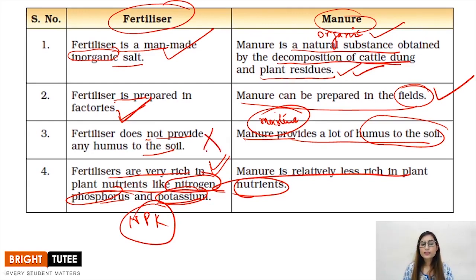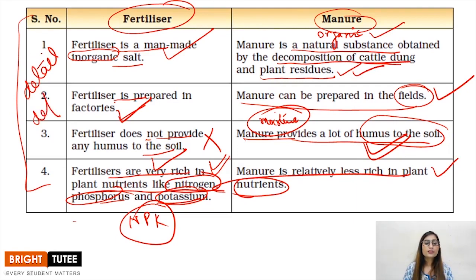Fertilizer does not provide any humus to the soil while manure provides humus to the soil. Then, fertilizers are very rich in particular nutrients, plant nutrients such as nitrogen, phosphorus and potassium, while manure is relatively less rich in plant nutrients. These four points you have to provide in detail with the definitions. When you differentiate, you firstly provide the definitions of both the terms that you have to differentiate between, then you give different points.